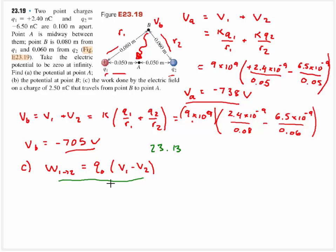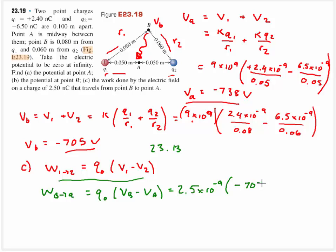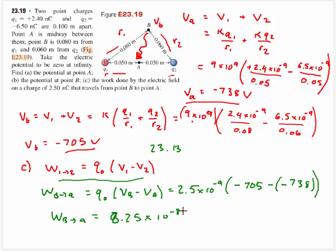Since we're going from B to A rather than A to B, the work from B to A equals the charge we're moving times the voltage at B minus the voltage at A. The charge is 2.5 times 10 to the negative 9th coulombs. The voltage at B is negative 705 volts, and we subtract the voltage at A, which is negative 738 volts — so they actually add. The work from B to A equals 8.25 times 10 to the negative 8th joules.